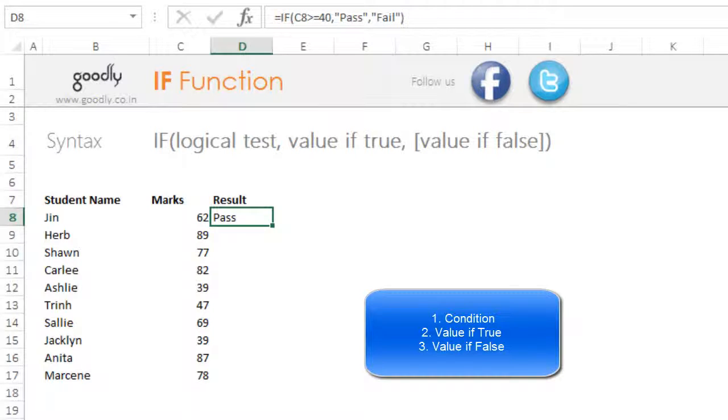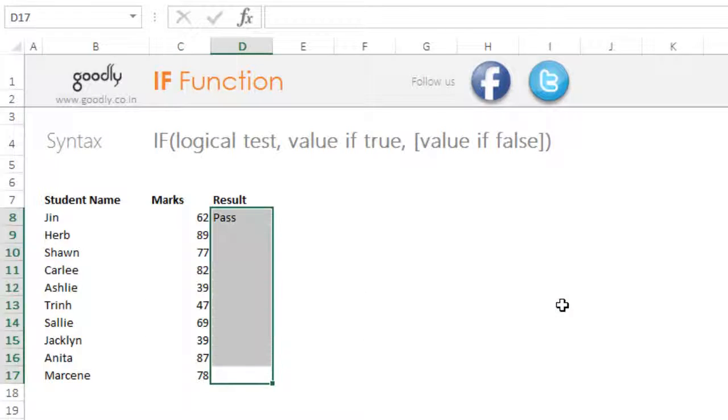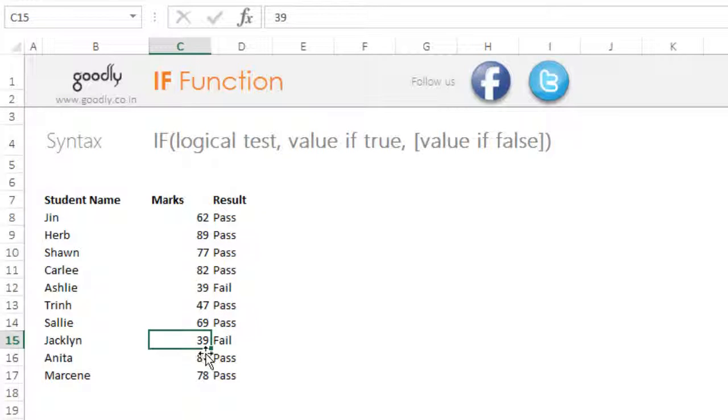Since he's got 62 marks which is clearly above 40, he's passing the exam. I will drag that down to the rest of the cells. For people who have got less than 40 they are failing, which is right here and right here. So that's how you use the IF statement.